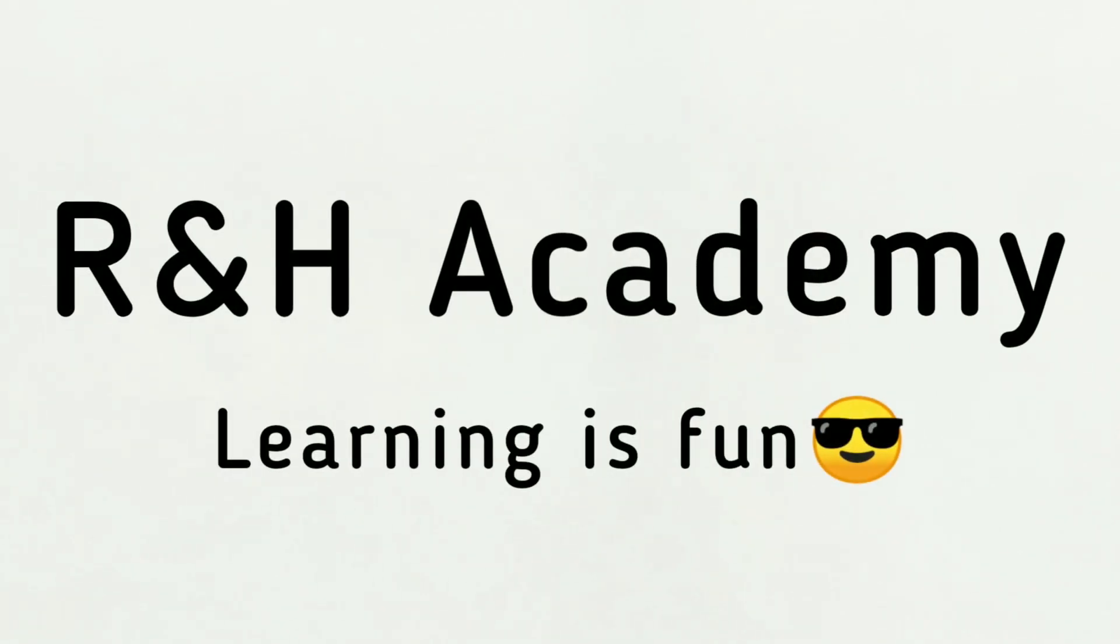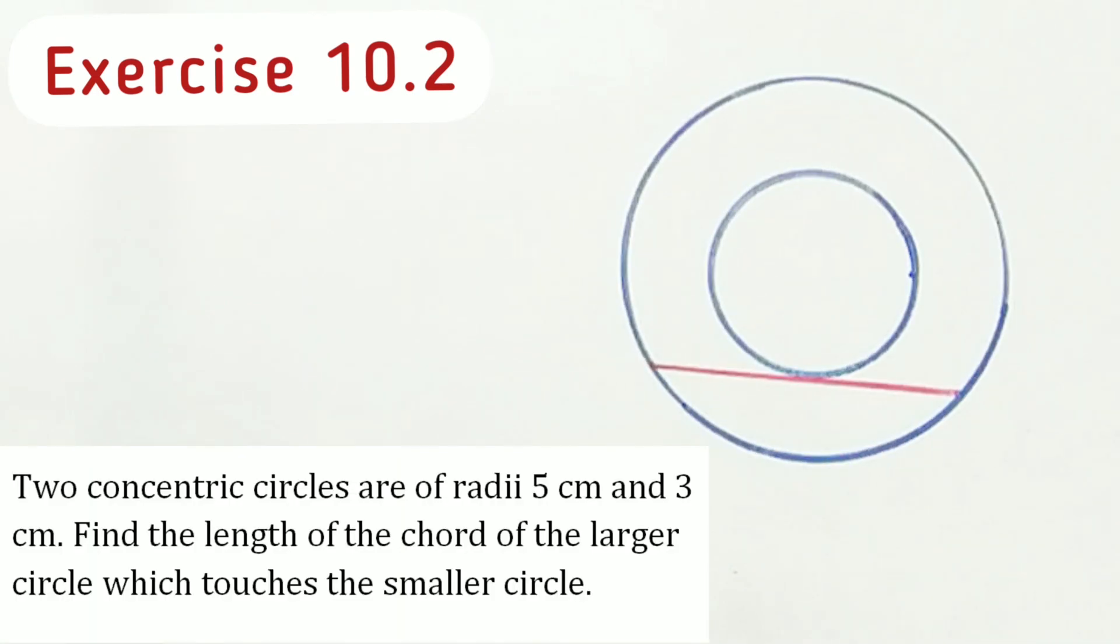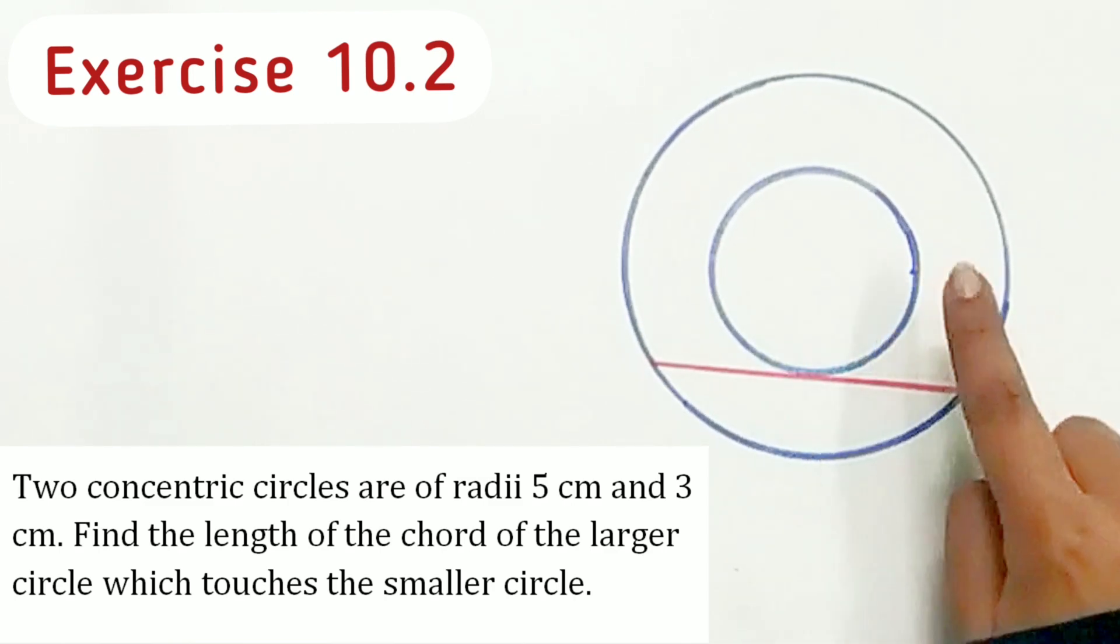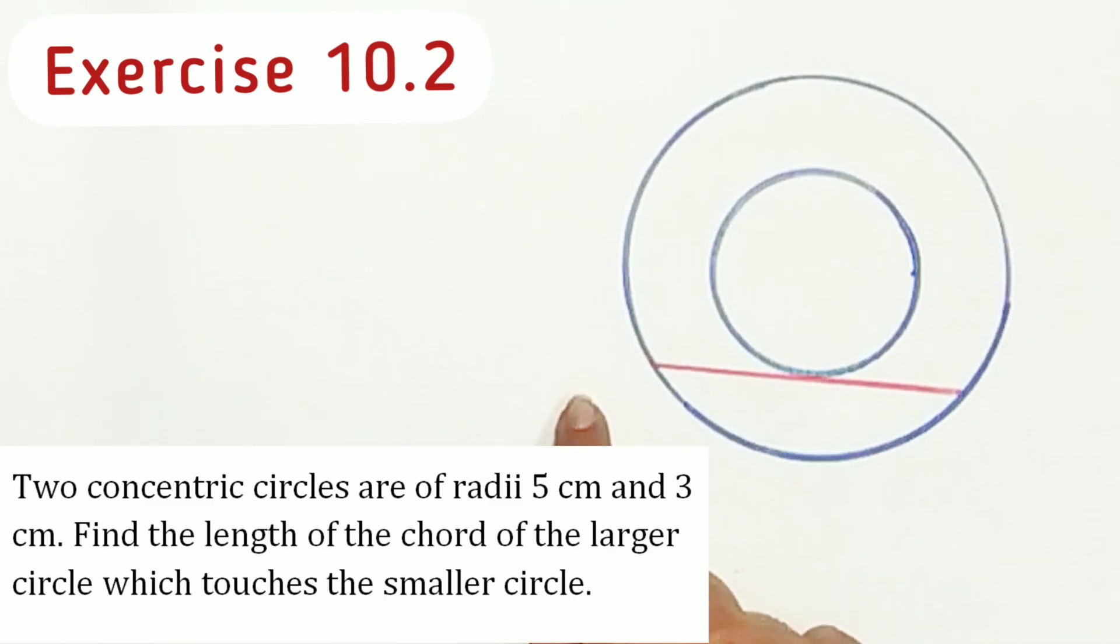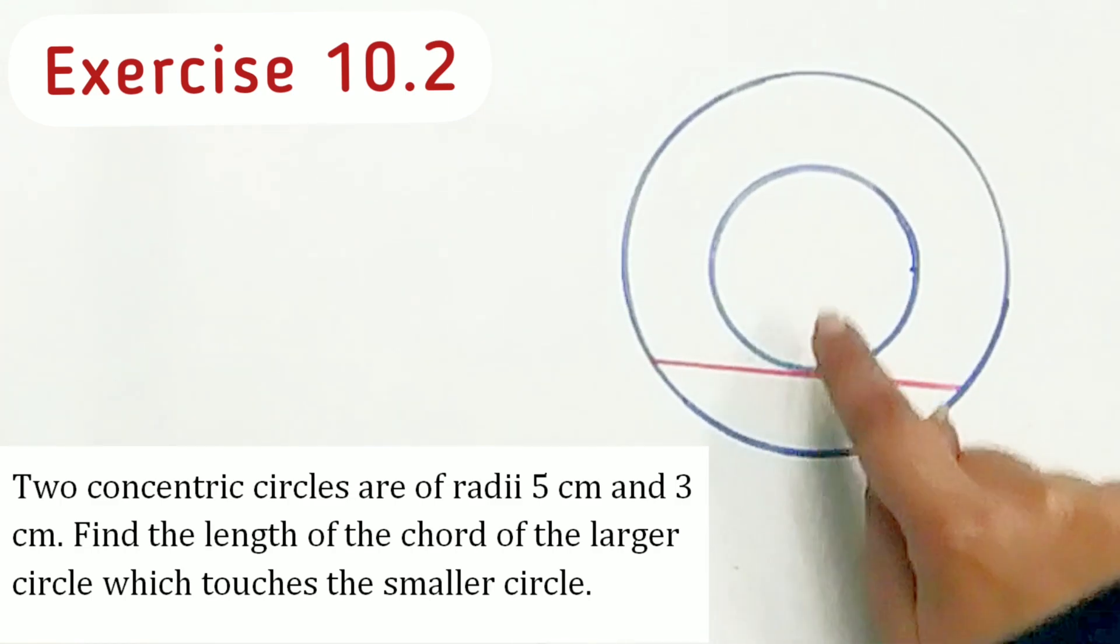Welcome to R&H Academy channel. Question 7 of exercise 10.2 says two concentric circles are of radii 5 cm and 3 cm. Find the length of the chord of the larger circle which touches the smaller circle.